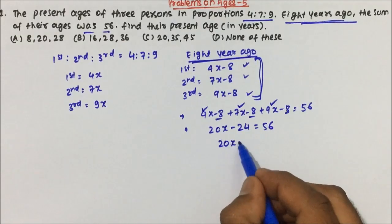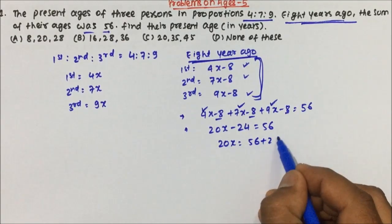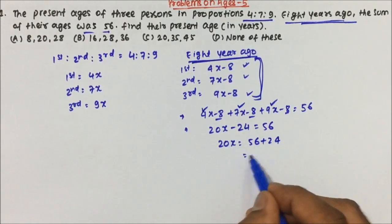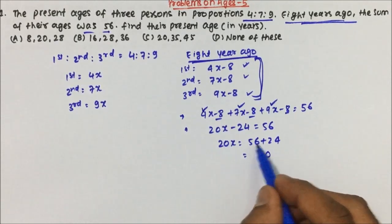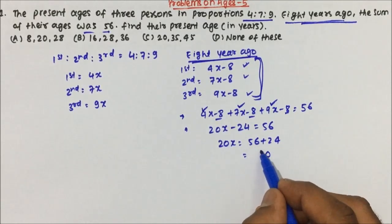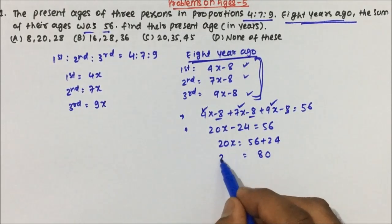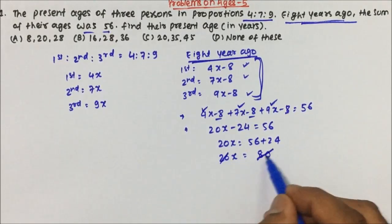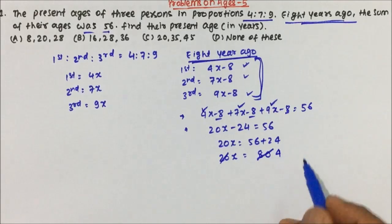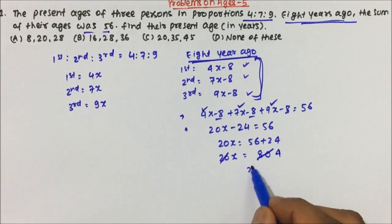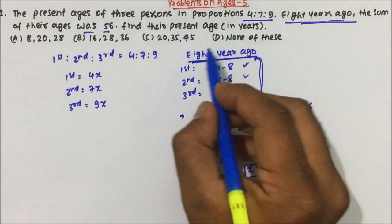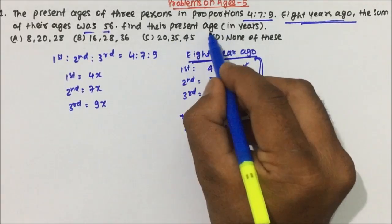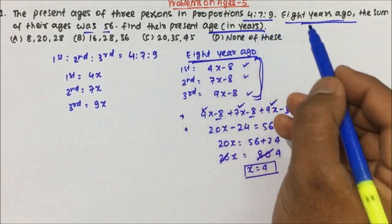20x = 56 + 24. 6 + 4 is 10, and 7 + 1 is 8, so 20x = 80. Dividing both sides by 20, x = 4.